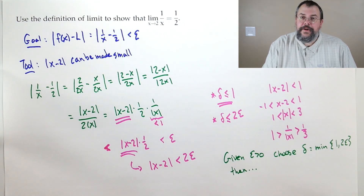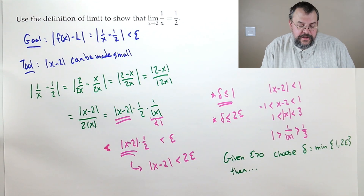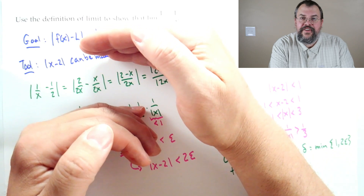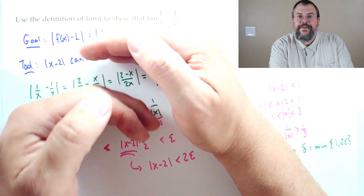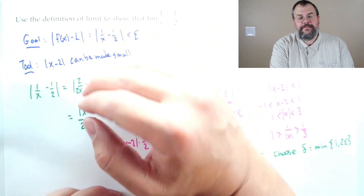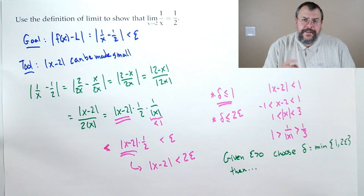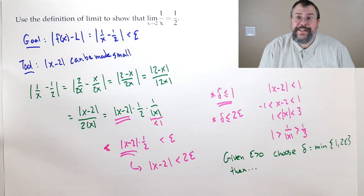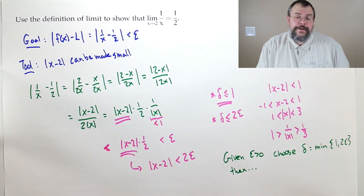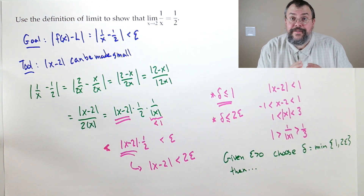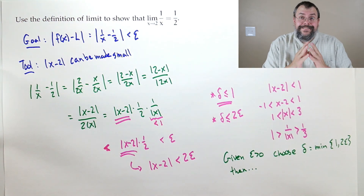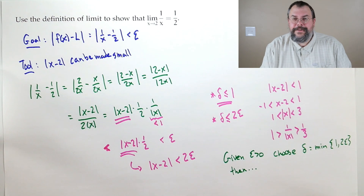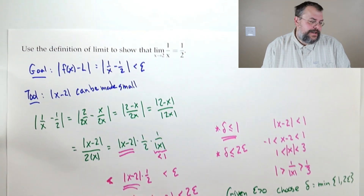Again, you don't know the right choice for delta until the end. Once you know it, you rerun the argument properly. A smart approach: leave a gap at the very start, run the argument, then fill in the answer for delta at the top.